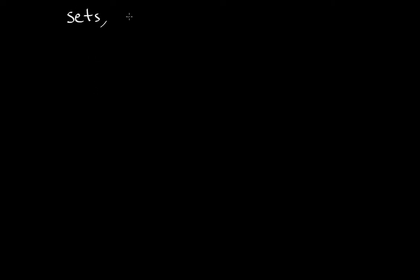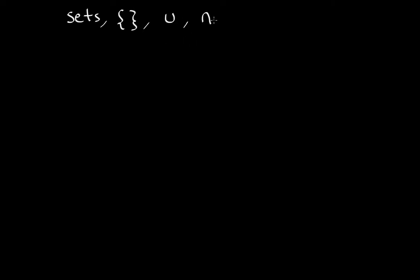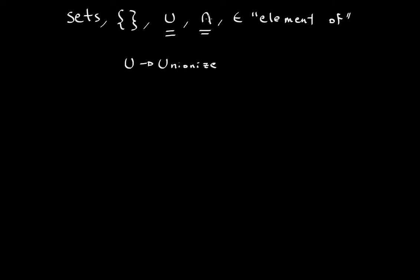So far we have been learning about sets and empty sets. We have also learned about unions and intersections, and what this symbol means — it means 'element of.' A good way to remember these symbols: the U-shaped symbol is union, and the upside-down U is intersection.